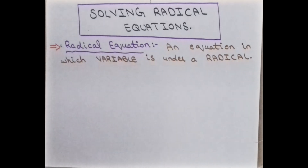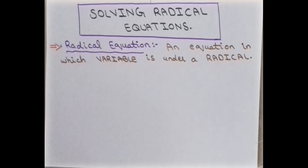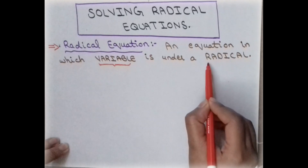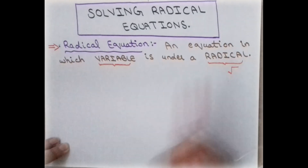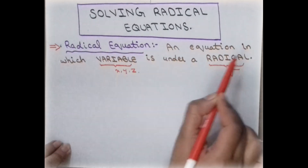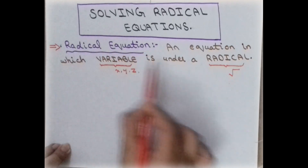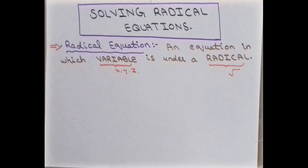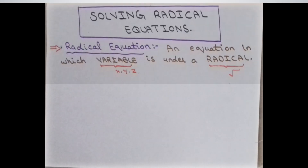Welcome to Math Society. Here we are back with another very interesting video. Today's topic is how to solve radical equations. The first question that arises in our mind is: what is a radical equation? Basically, an equation in which a variable (X, Y, Z) is under a radical sign — that is, under a root sign. So any equation in which a variable is under a radical is called a radical equation. Let us check out some examples, but before going to the examples, let's check out the rules for how to solve them.